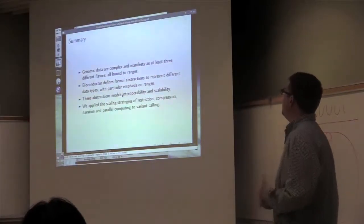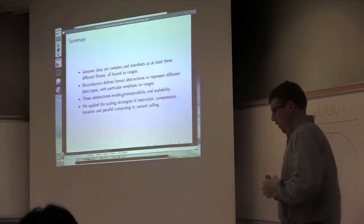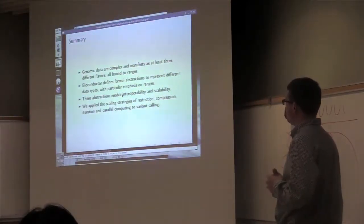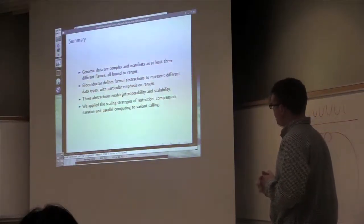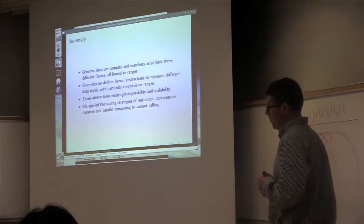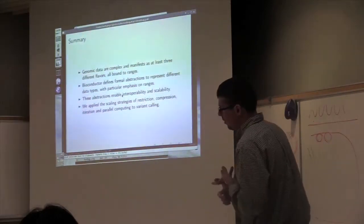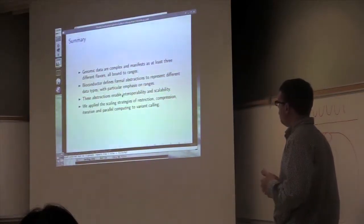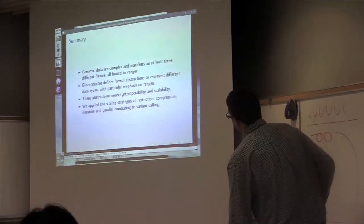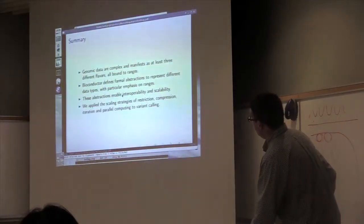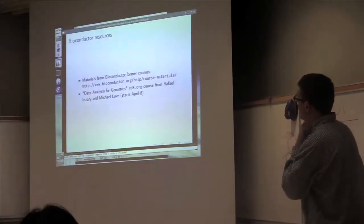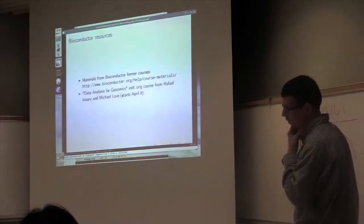In conclusion, to summarize, we have these complex data, and we're relying on formal data structures to ensure our data integrity. Our abstractions allow us to do two things. They allow us to be interoperable, and they hide a lot of the details that we rely on to be scalable, a lot of complexity. I showed how we can apply these various strategies to variant calling.